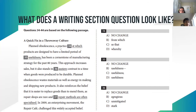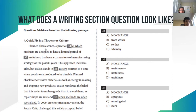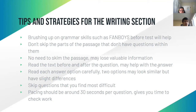Moving on to writing section tips. A typical writing section question has the passage on the left and questions on the right simultaneously. They underline a word or phrase and ask what should be done — options include 'no change' or several alternatives. There are also other question types, like where to add a sentence. Tips for the writing section: brush up on grammar skills like FANBOYS — the acronym for coordinating conjunctions — before the test.